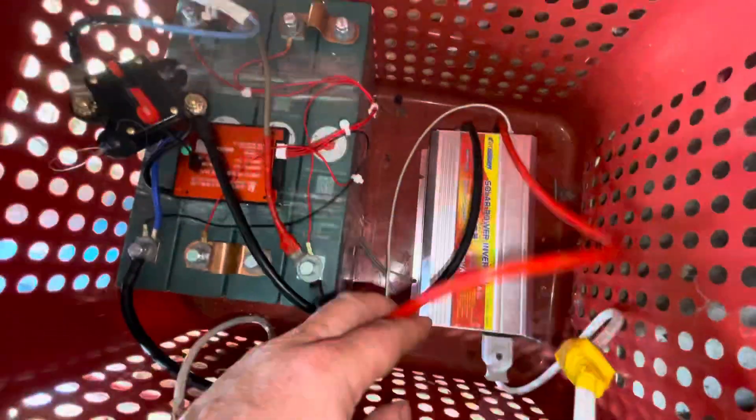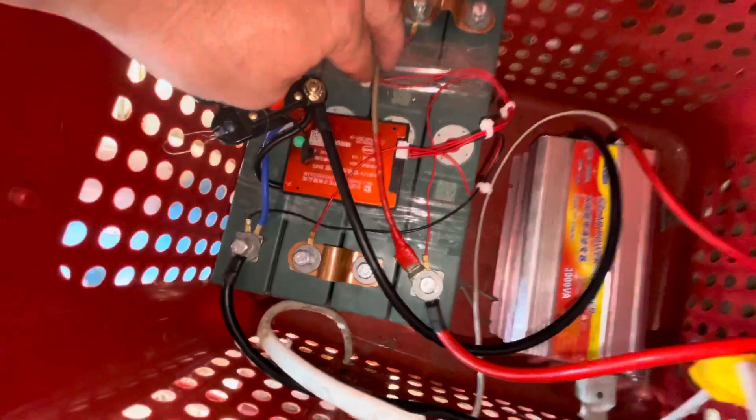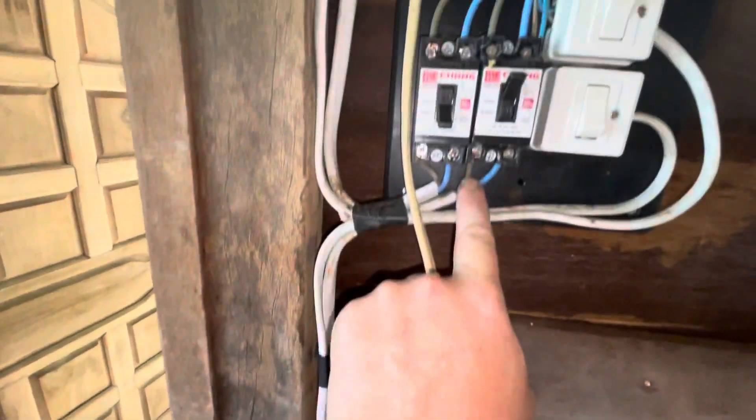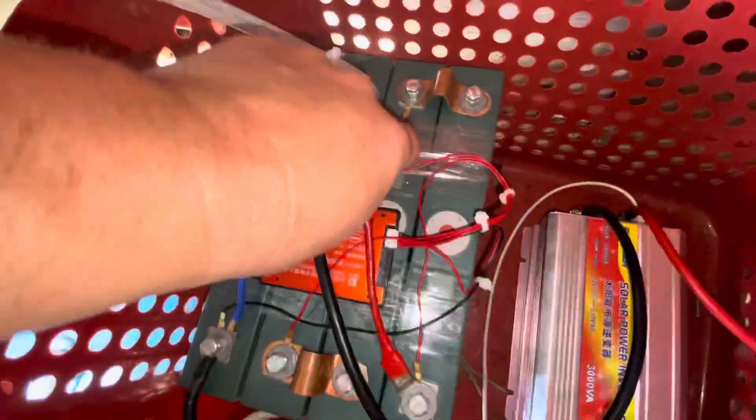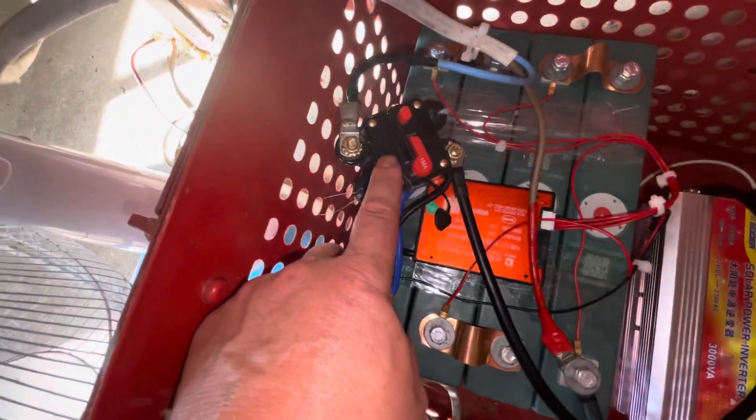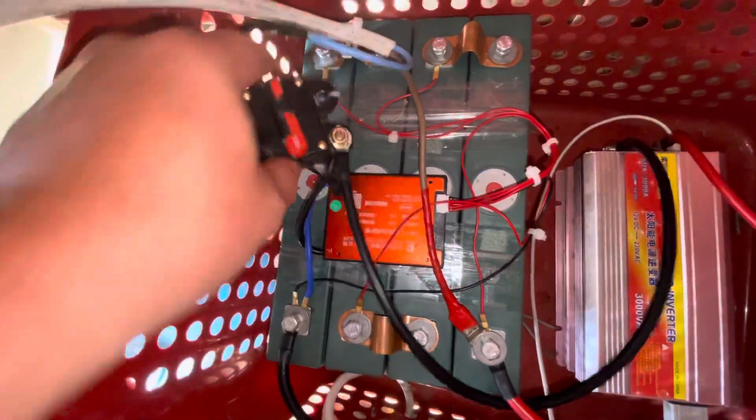So we've got the positive here, it is going to have an inverter here. This is the positive going up to this switch here, which is then going up to the charge controller. Then we've got the negative going up to the charge controller. I've got it going through a DC fuse, so just forget that's there.